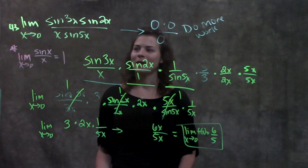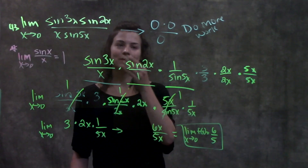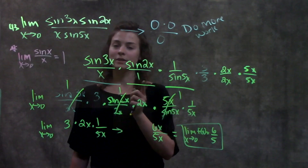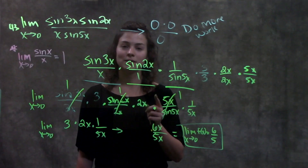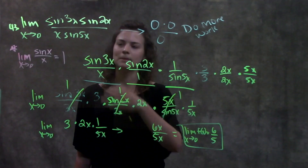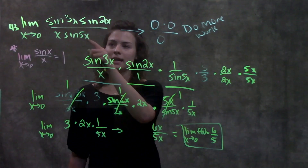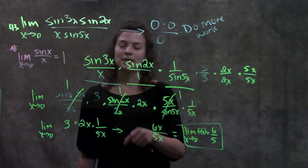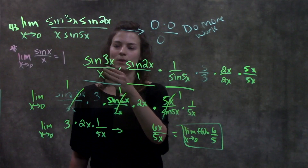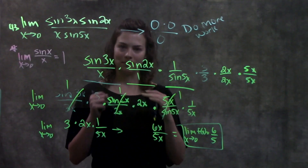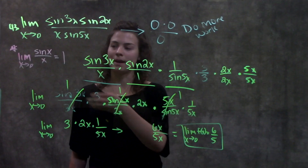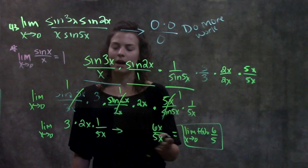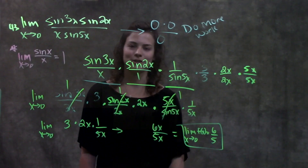Just a brief recap: I had this huge function. My first step — direct substitution — led me to an indeterminate form. So from there I wanted to first make sure the entire function is written in terms of sine and cosine, which it already was. Then I made each sine function match the identity by multiplying each fraction by a term that would leave me with sine something over that same something. Each fraction that matched the identity I crossed out because it equals one. From there I multiplied everything out and got my answer: six over five.